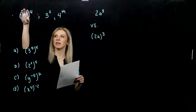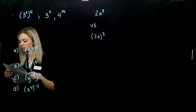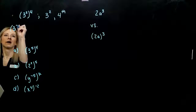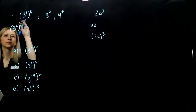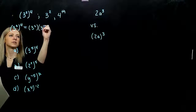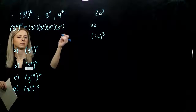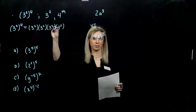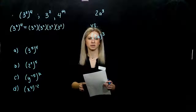So anything on the inside times itself four times in total. How can we break it down? This thing times itself four times: three squared, times three squared, times three squared, times three squared. Breaking down what that fourth power means for my base — it times itself four times in total.